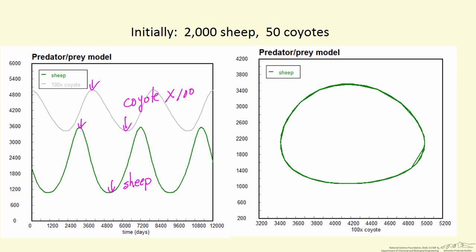An alternate way of plotting this is a phase plane, shown on the right. On the y-axis is the number of sheep, and on the x-axis is the number of coyotes, again multiplied by 100. Time proceeds this way.